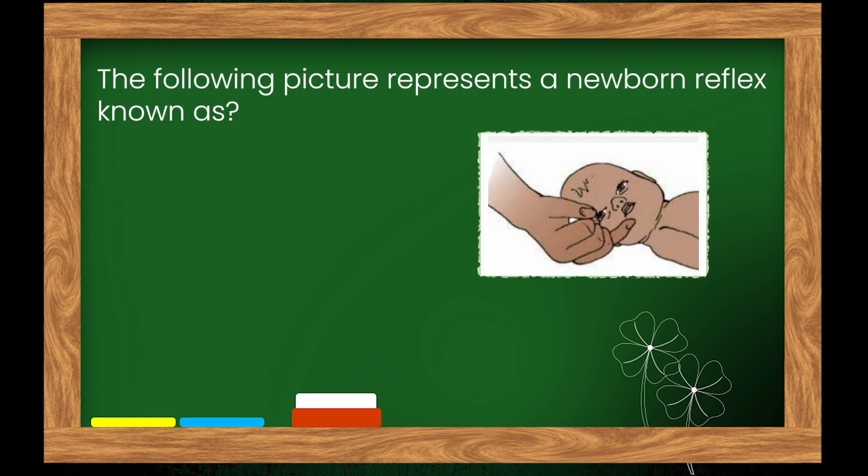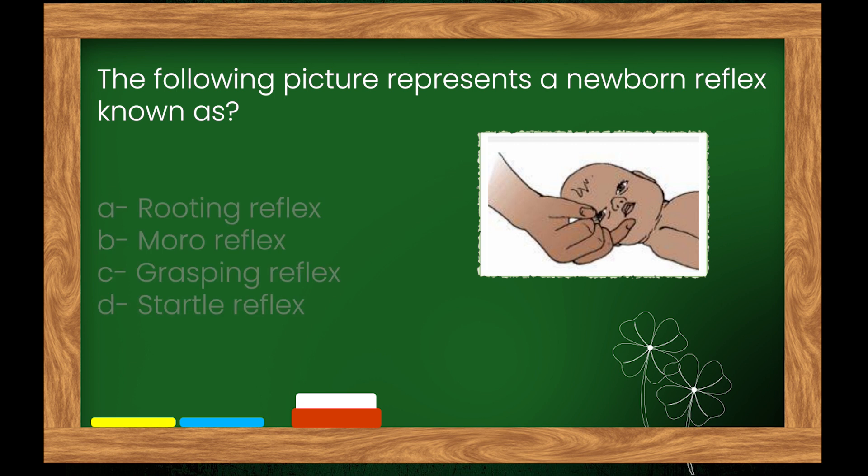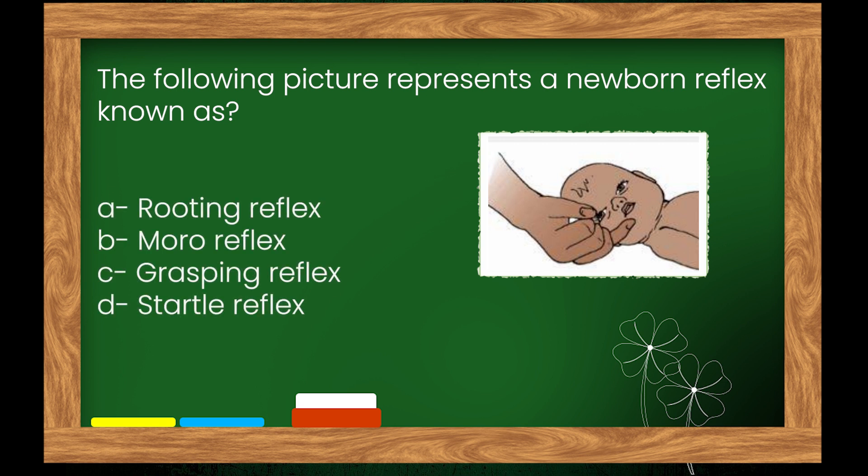Question 9: The following picture represents a newborn reflex known as — options: A. Rooting reflex, B. Moro reflex, C. Grasping reflex, D. Startle reflex. The right answer is option A: Rooting reflex.